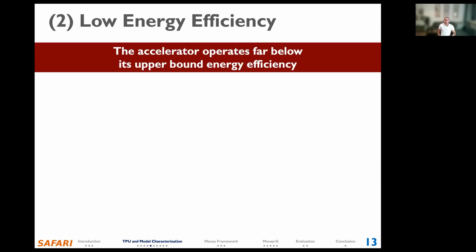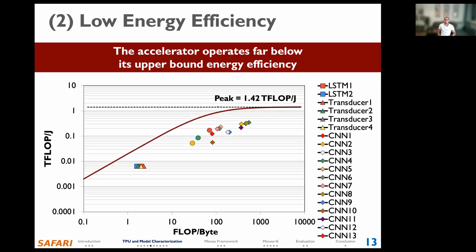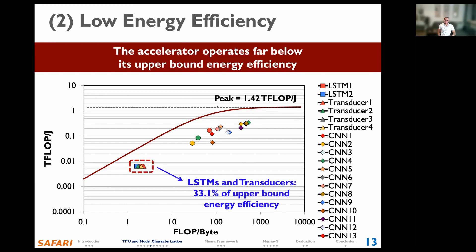Second, we observe that the Edge TPU operates below its theoretical maximum energy efficiency. We again use a roofline model, where the y-axis shows energy efficiency in teraFLOPS per joule. The peak energy efficiency of the accelerator is 1.42 teraFLOPS per joule. Energy efficiency is particularly low at 33.1% of maximum for LSTMs and transducer models, and even the best CNN models achieve only 50.7% of maximum efficiency.